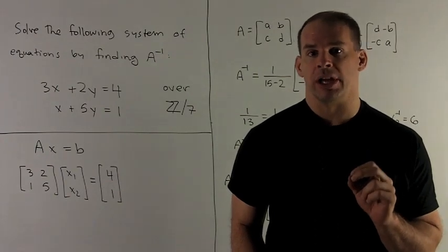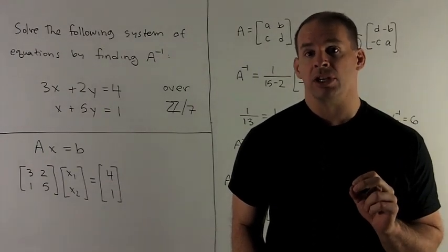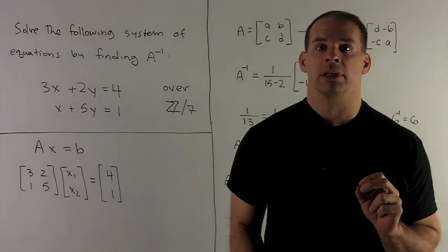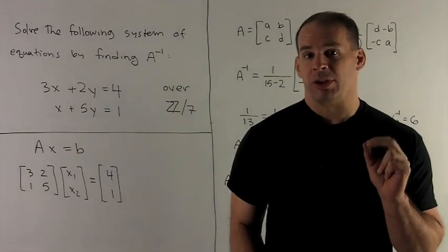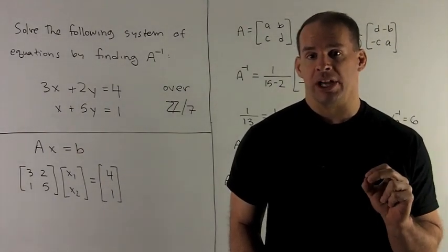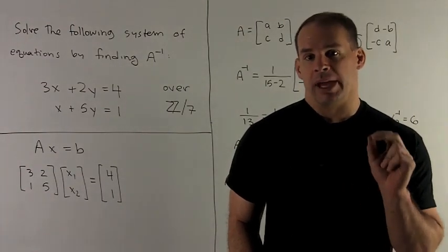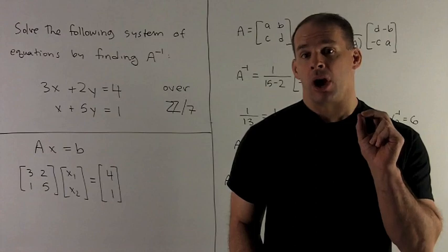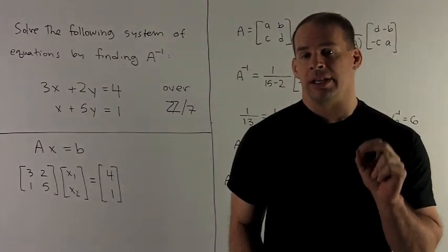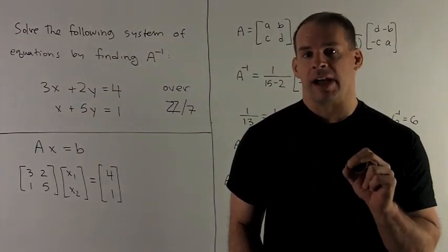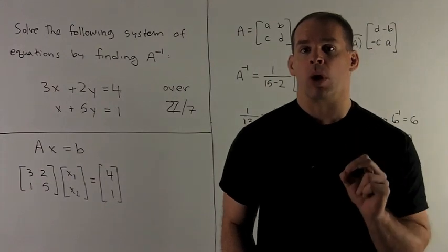Solve the following system of linear equations over Z7 using A inverse. So my first step is going to be to rewrite the system of equations in matrix vector form. We'll have a matrix A times our column vector of unknowns equal to a column vector on the other side.